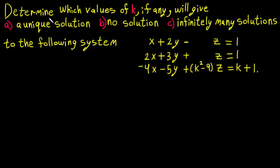Let's solve this question: determine which value of K, if any, will give a unique solution, no solution, or infinitely many solutions to the following system. We have three variables X, Y, and Z, plus the constant K, which will decide which solution type we get. Before starting, we need to put this into an augmented matrix.